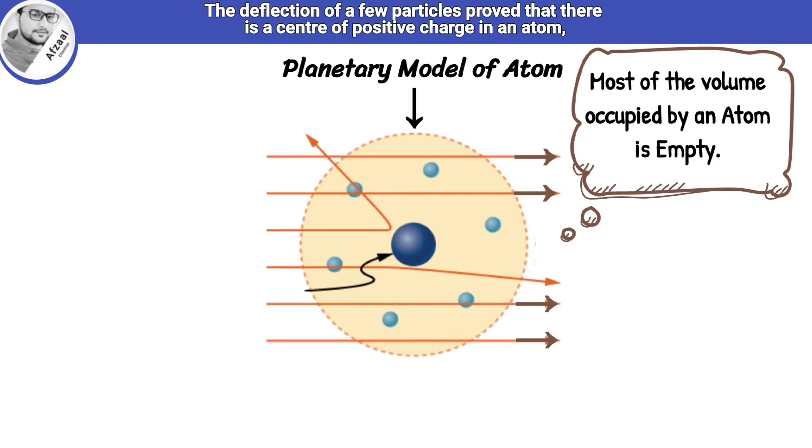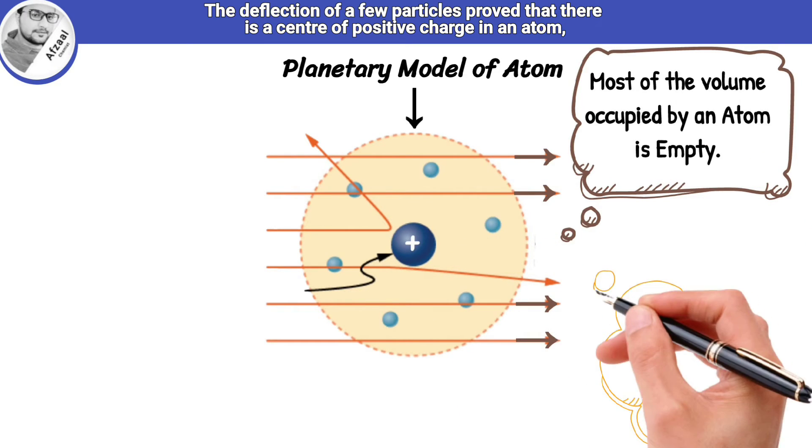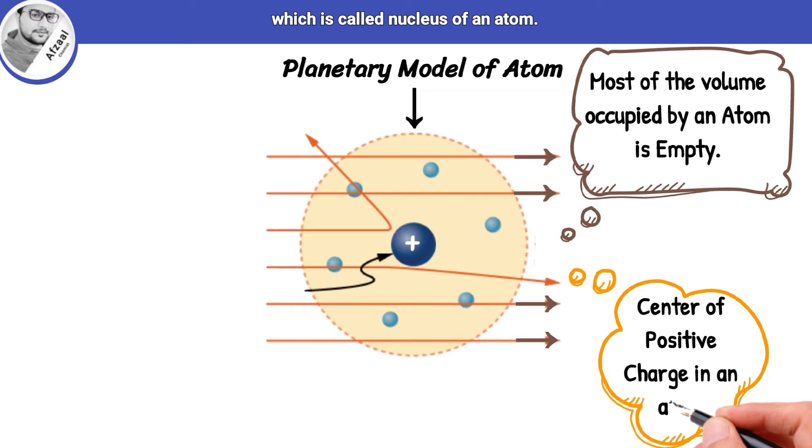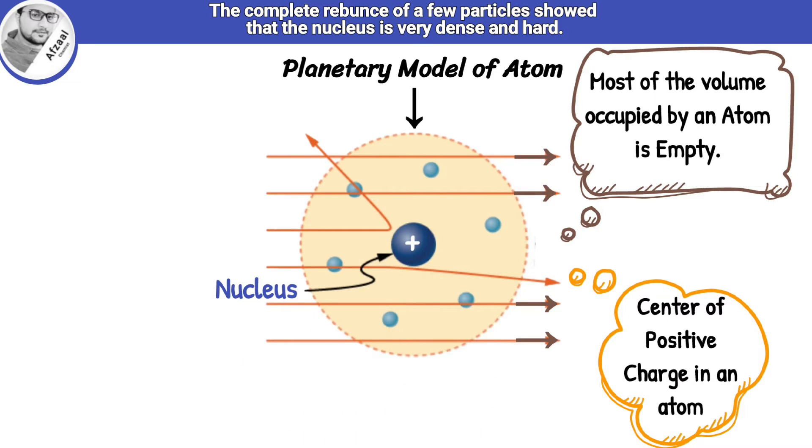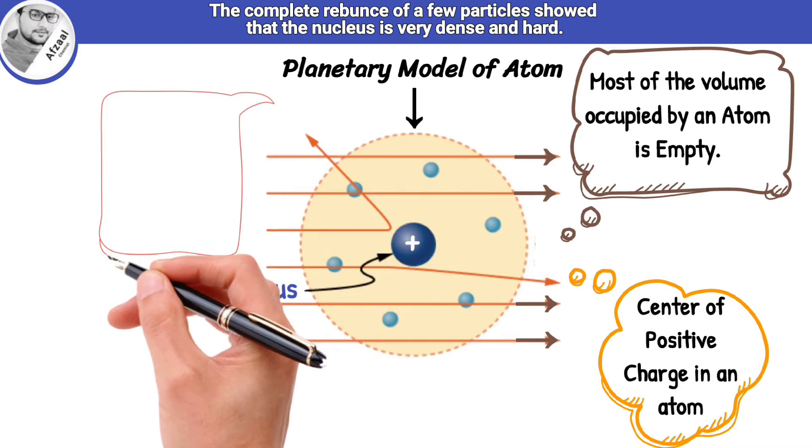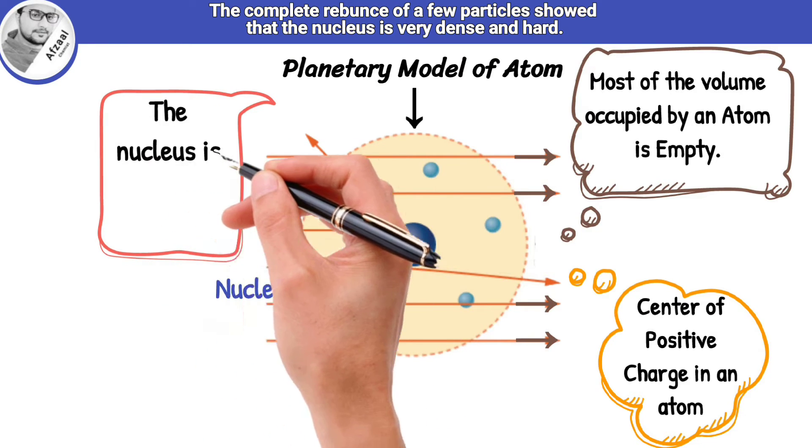The deflection of a few particles proved that there is a center of positive charge in an atom, which is called nucleus of an atom. The complete rebounds of a few particles show that the nucleus is very dense and hard.